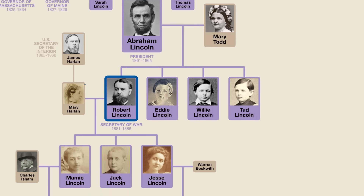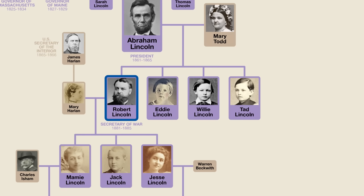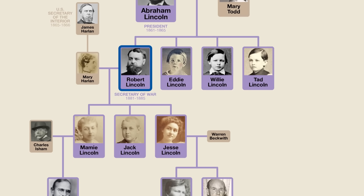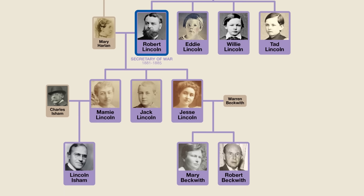Robert married Mary Harlan, daughter of James Harlan, who went on to serve as the Secretary of the Interior after Abraham Lincoln's assassination. Robert himself ended up in politics as well, serving as the US Secretary of War under Presidents Garfield and Arthur, and then serving as the US Ambassador to the UK. He and his wife Mary had three children, who were thus President Lincoln's only grandchildren, all born after the assassination.